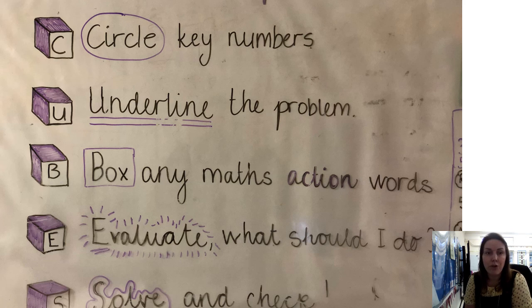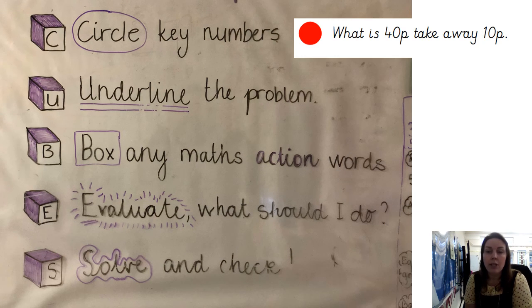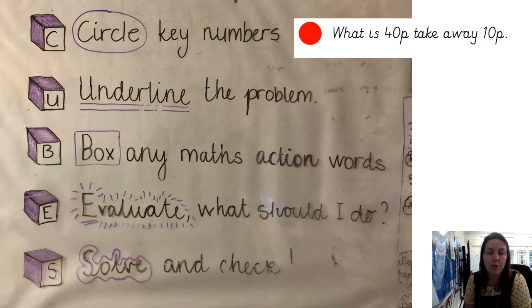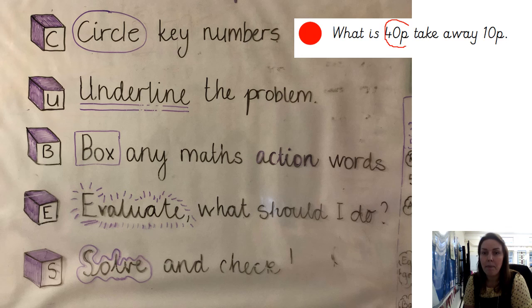Here are some samples from this week's word problems when we are looking at money. Here is our red problem and it says: what is 40p take away 10p? So first of all I am going to circle the key numbers using the red colour. In this word problem, 40p is the key number and 10p is the key number. I will then underline the problem — we need to find out what is those numbers taken away.